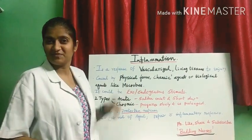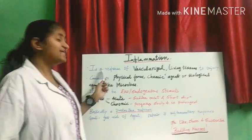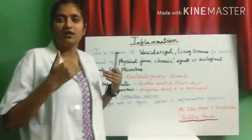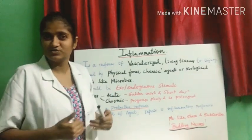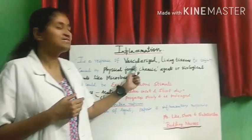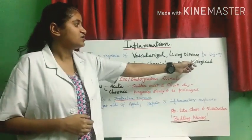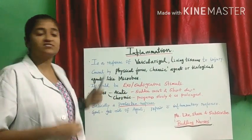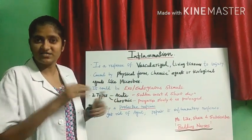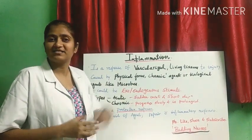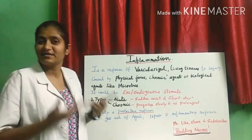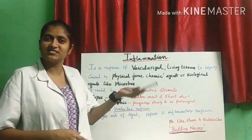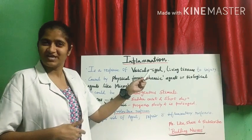So, what is inflammation? It is a response of vascularized tissues — that is, tissues which are supplied by blood — to an injury, whether external or internal. It is caused by physical agents, chemical agents, or biological agents like microorganisms. So it could be an exogenous or endogenous injury.